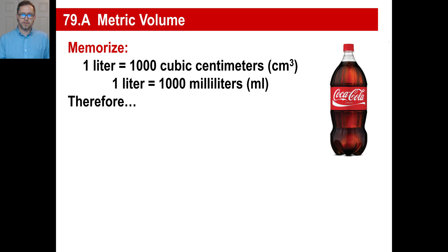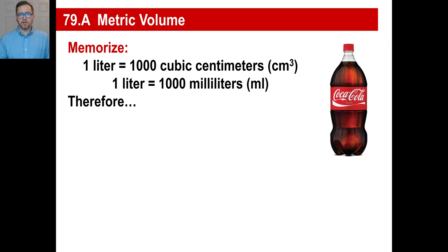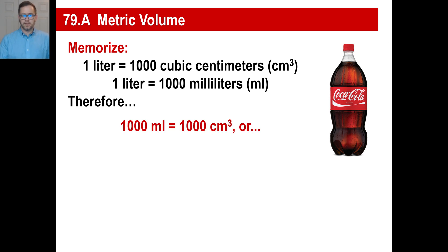That's a two-liter bottle. You know what a liter is, right? So a two-liter bottle looks like that. One liter — you need to memorize this, so write this down. A liter is also the same thing as a thousand cubic centimeters. A liter is also a thousand milliliters. So if a liter is a thousand cubic centimeters and a liter is also a thousand milliliters, then a thousand milliliters is the same thing as a thousand cubic centimeters.